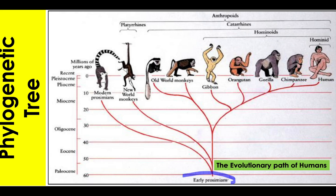Here we have the early prosimians as the common ancestor of all primates, and from there all these different organisms have developed. Here are the humans, and along that line are the chimpanzees. Notice we did not come from the branch of chimps — if we had developed from the line of chimps, our line would branch from the chimp line, but it doesn't. This shows that we have our own developmental line, with a common ancestor shared with chimps, while chimps are on one line and we are on another.